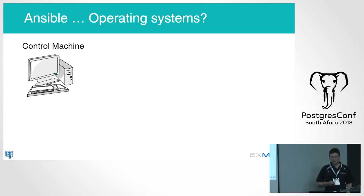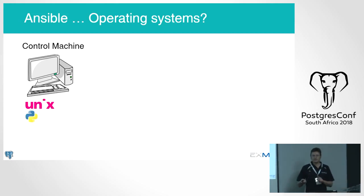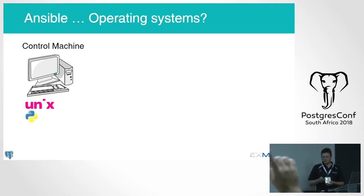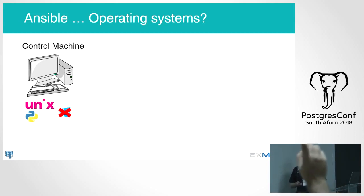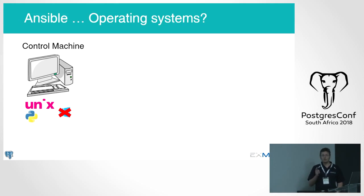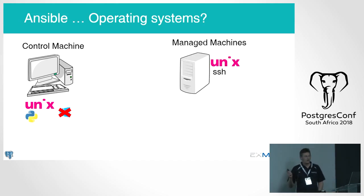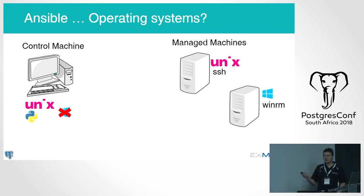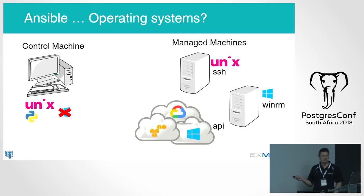Which operating systems does Ansible run on? The control machine — the one that runs the playbooks — needs a Unix-like system: Linux, macOS, or similar, and you need Python installed. Windows is not currently natively supported as a control machine, though there are ways to get it running on Windows. The managed machines can be Unix-like via SSH, Windows via WinRM, and a large number of cloud resources including Google, AWS, and Azure.